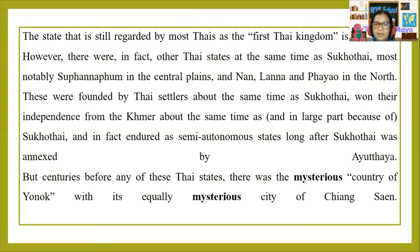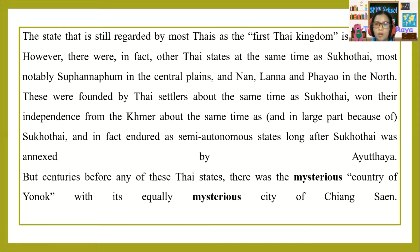The state still regarded by most Thais as the first Thai kingdom is Sukhothai. However, there were in fact other Thai states at the same time as Sukhothai, most notably Suphanburi in the central plains and Nan, Lanna, and Phayao in the north. These were founded by Thai settlers at about the same time as Sukhothai, won their independence from the Khmer at about the same time, and in large part because of Sukhothai. In fact, Indochina endured as semi-autonomous states long after Sukhothai was annexed by Ayutthaya.